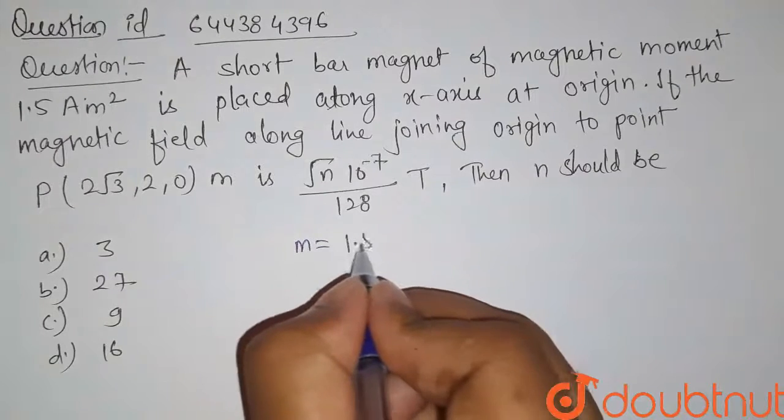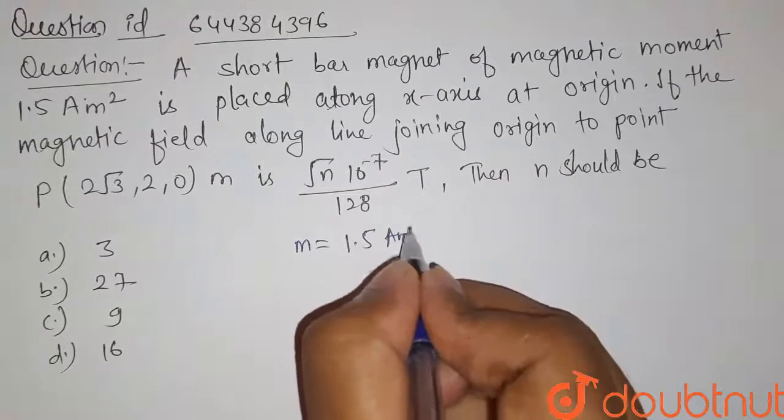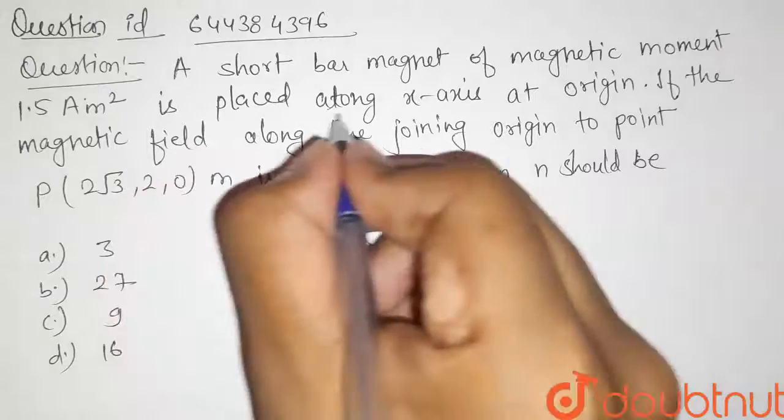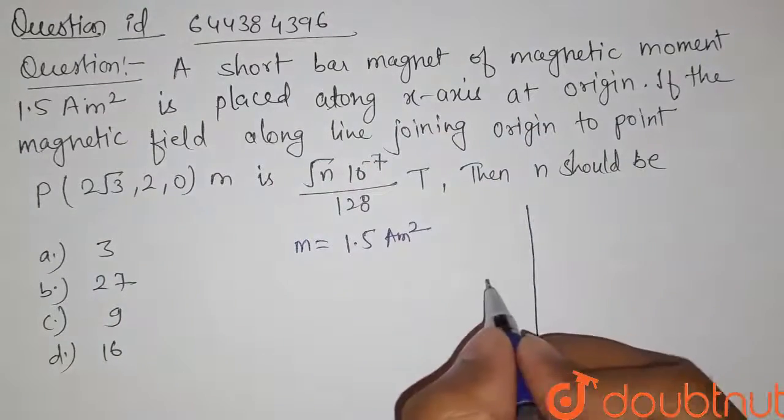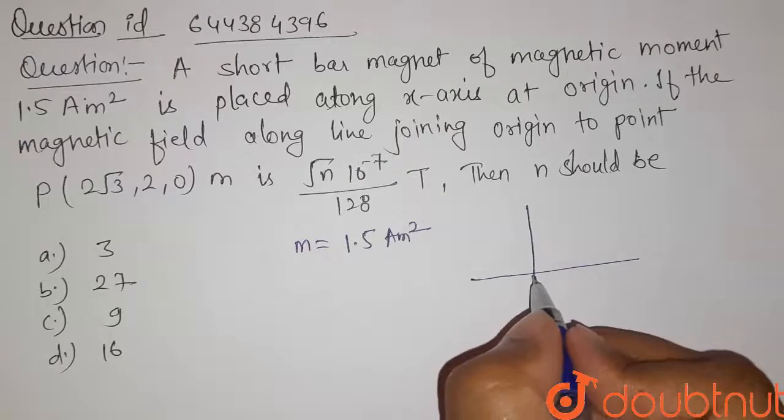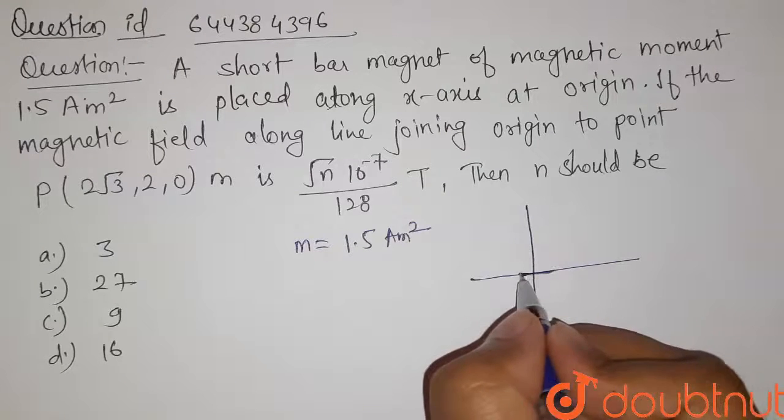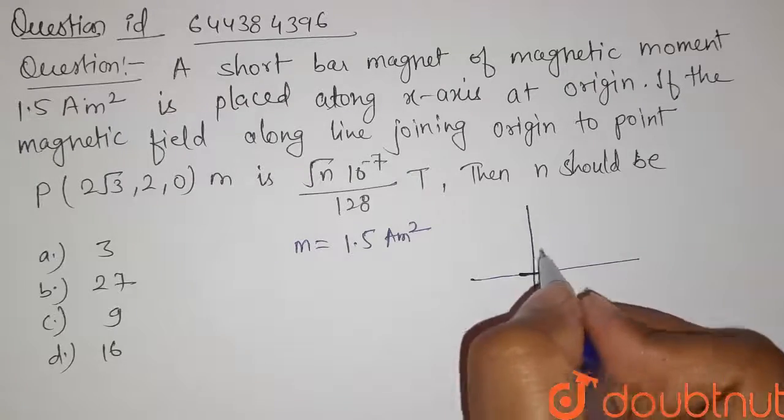So magnetic moment given here is 1.5 A·m² is placed along x-axis at origin. So this magnetic moment is placed along x-axis and at origin.